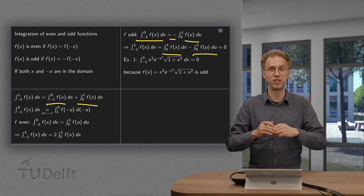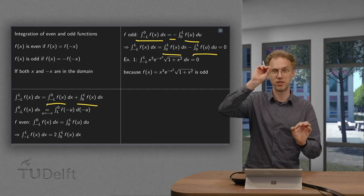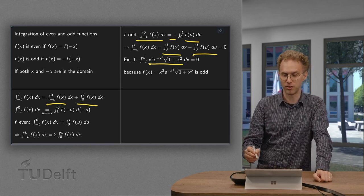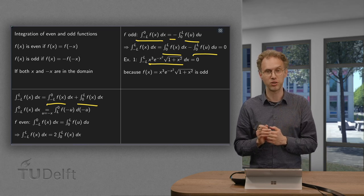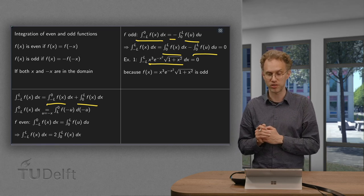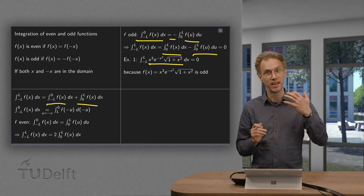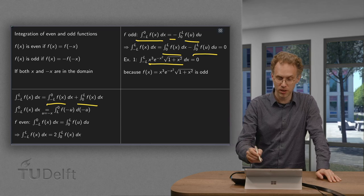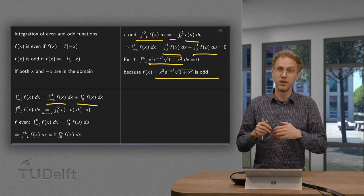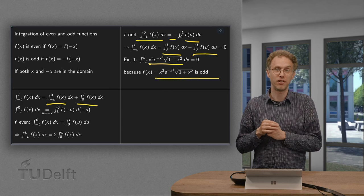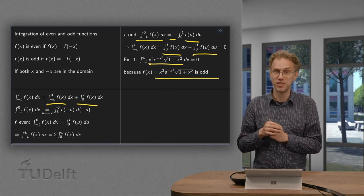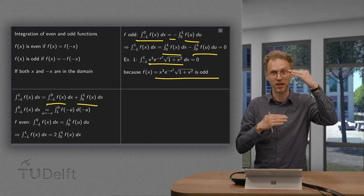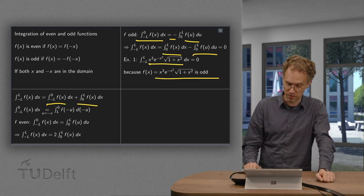So the integral of an odd function, whichever it is, from minus l to l, is always 0. For example, if we have this dreadful odd function over here, note that it is odd, because x squared is even, so this exponential is even, and the square is even, and the x cubed is odd, so the total function is odd. Even though we cannot find an antiderivative explicitly for this dreadful function, we know that its integral is 0, because we integrate from minus l to l some odd function. There we go, done immediately.